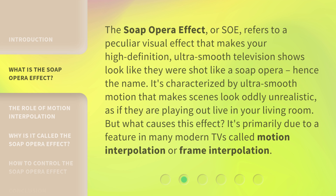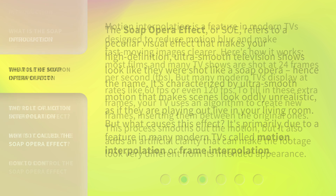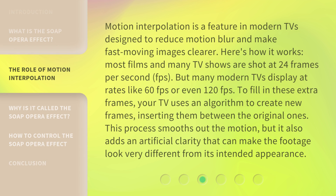It's primarily due to a feature in many modern TVs called motion interpolation or frame interpolation. Motion interpolation is designed to reduce motion blur and make fast-moving images clearer. Most films and many TV shows are shot at 24 frames per second, but many modern TVs display at rates like 60 FPS or even 120 FPS. To fill in these extra frames, your TV uses an algorithm to create new frames, inserting them between the original ones. This process smooths out the motion, but it also adds an artificial clarity that can make the footage look very different from its intended appearance.